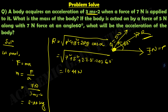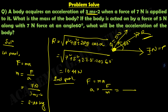Now we find the acceleration of the body under this resultant force. The mass is 2.33 kg. Using F equals MA, acceleration equals resultant force divided by mass: 10.44 divided by 2.33 gives a resultant acceleration of 4.48 meter per second square. This is the answer to the second part of the question.